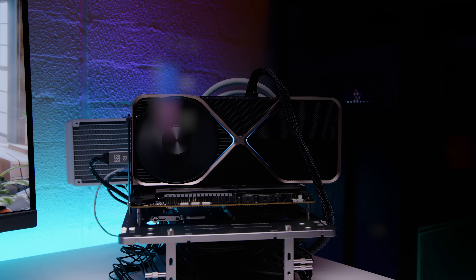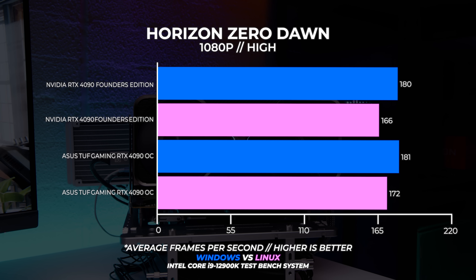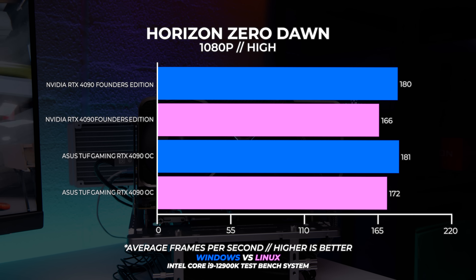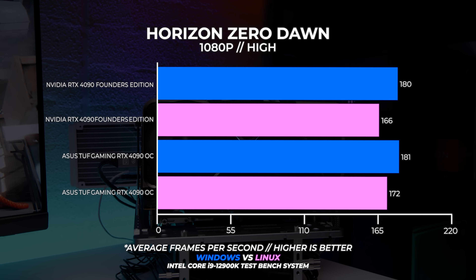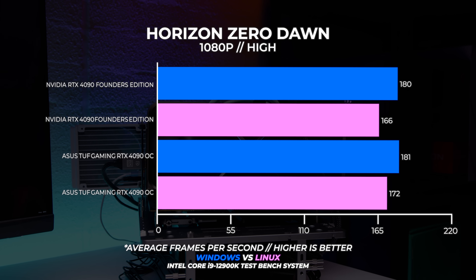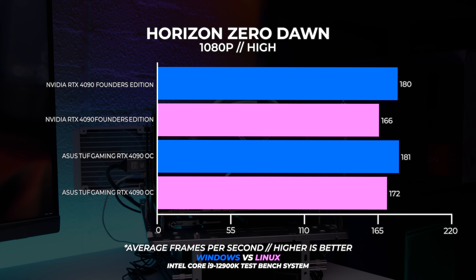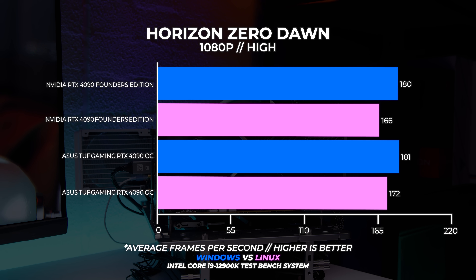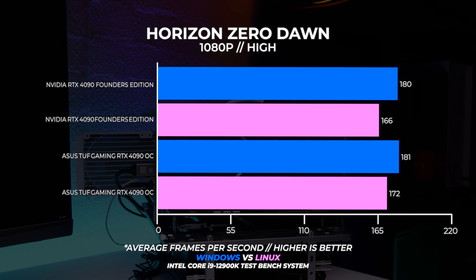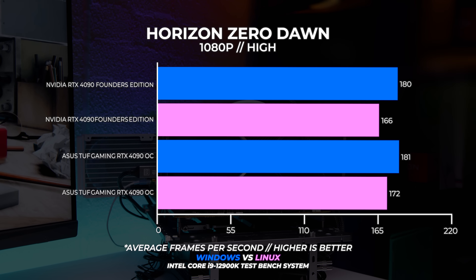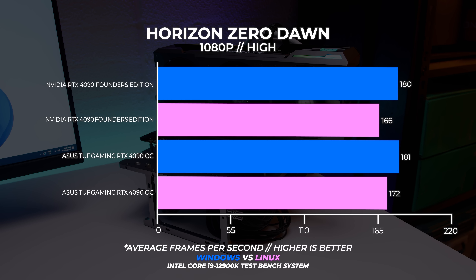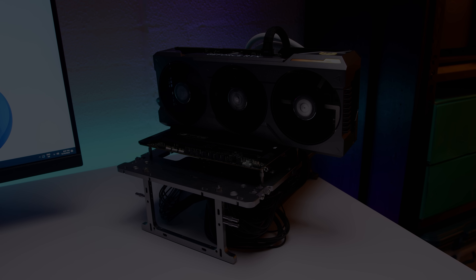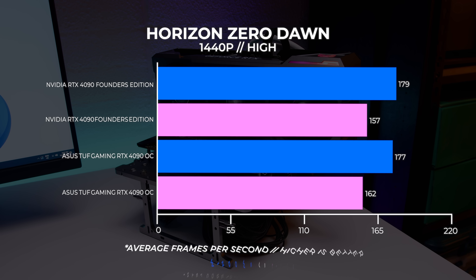Lastly we've got a new benchmark — Horizon Zero Dawn. This is a pretty popular one at the moment and it also runs really well in Linux under Proton — you can thank the Steam Deck for that. At 1080p the 4090 performance is quite close relative to the frames per second. As with most of the testing here, we're seeing Windows come out on top, and that's to be expected since this runs natively on Windows and through Proton in Linux. If you don't know what Proton is, we've done a whole video about it and I'll link that in the description.